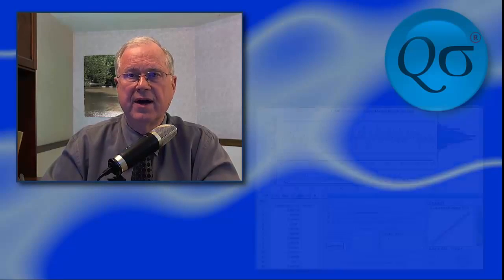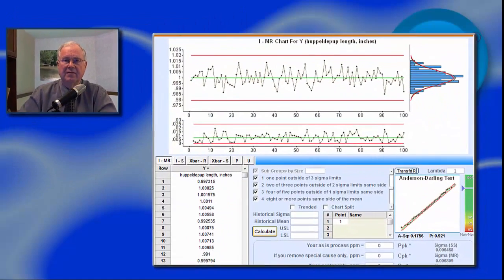Suppose we have to make hupple-de-pups, which have a specification of 1 inch length plus or minus 30 thousandths of an inch, and assume that our data looks like this. We have a history of about 100 data with no indication that anything unusual is going on.